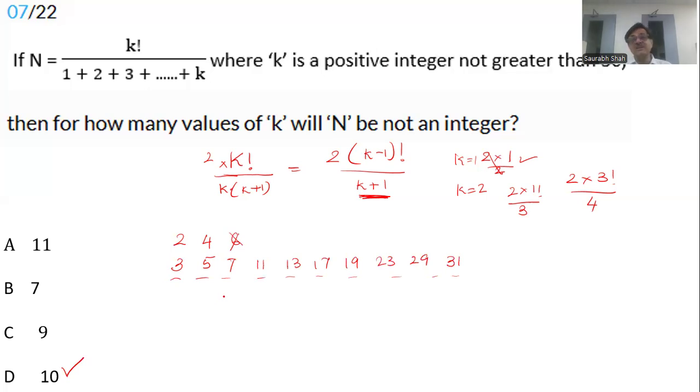The correct answer is option D, 10. For 10 values of k, we will not have integers. Remember 31 is not k. K at that time would be 30. Don't get confused with k and k plus 1. The denominator is not k, it is k plus 1.